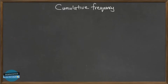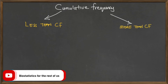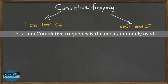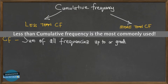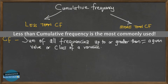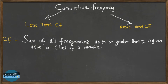Today we're going to be talking about cumulative frequencies. There are two types: the less-than cumulative frequency and the more-than cumulative frequency. A lot of people get confused when they hear the term cumulative frequency. As the name implies, cumulative frequency is the sum of all frequencies up to or greater than or equal to a given value or class of a variable.